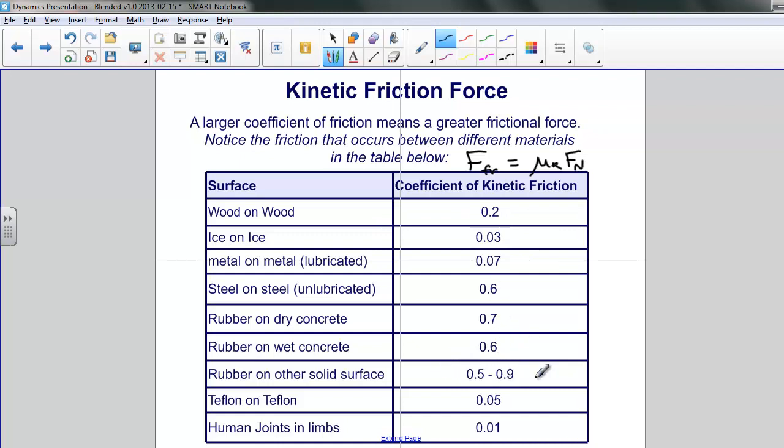Whereas, when we look at something like rubber on a variety of solid surfaces, whether wet concrete to others which probably have much higher frictional interactions, you can see this is actually quite large, approaching almost the weight of the object.